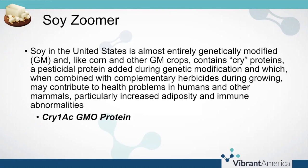There is also a cry protein on the soy zoomer assessing for genetically modified soy. This is the same type of situation as with corn — used to provide protection for the plant against pests. However, this protein often remains intact and crosses an intestinal barrier that is leaky or permeable and can get into systemic circulation and cause inflammation.